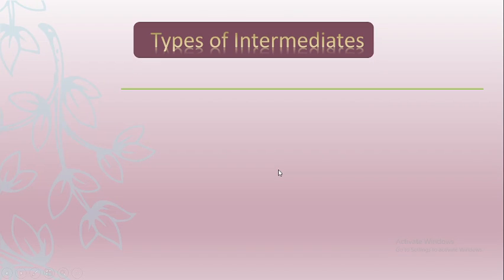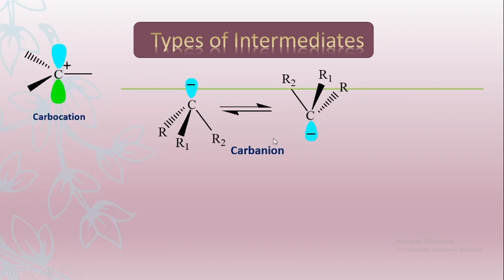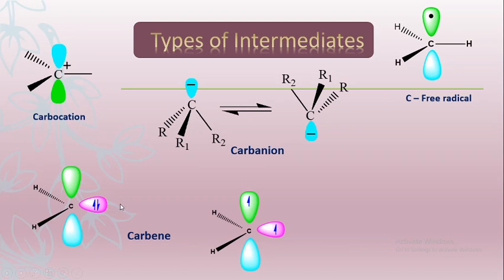Here are the types of intermediates: carbocation, carbanion, free radical, carbene — two types of carbene — and nitrene.